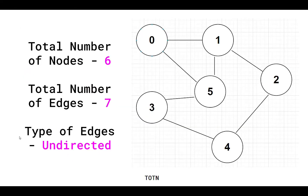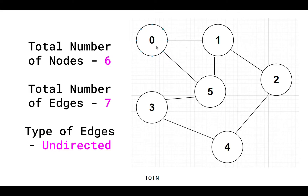This particular graph has 6 nodes and 7 edges, and the type of edges is undirected. In undirected edges, bidirectional movement is possible — if you have an undirected edge between 0 and 1, you can move from 0 to 1 and also move back from 1 to 0. Whereas with a directed edge from 0 to 1, backward movement would not be possible. Remember this difference between directed and undirected edges.